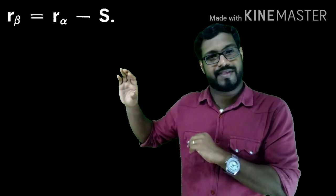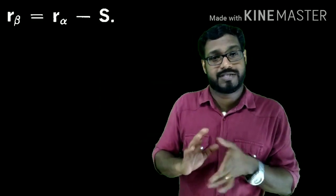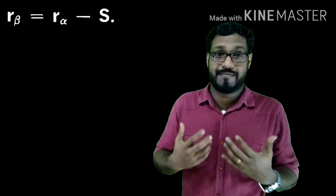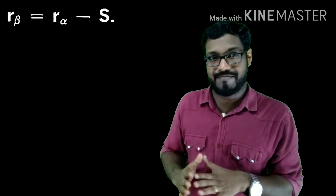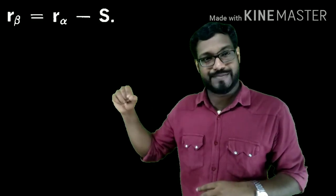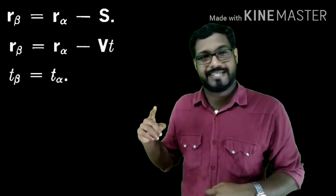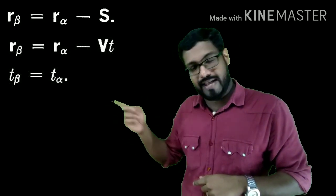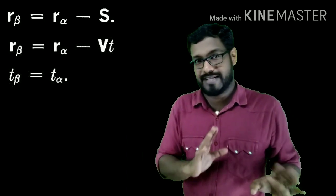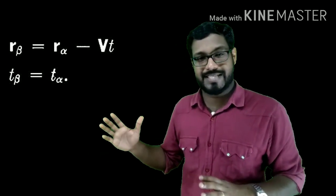Simply, we can say that a frame which is moving with a constant velocity with respect to an inertial frame is also an inertial frame. Now let's look into the transformation equations. We have R_beta = R_alpha − S. Since at t = 0 the origins coincide and beta moves with constant velocity V, we get S = Vt. Substituting back gives R_beta = R_alpha − Vt, and since both observers agree on time, t_beta = t_alpha. These two equations are known as the Galilean transformation equations.